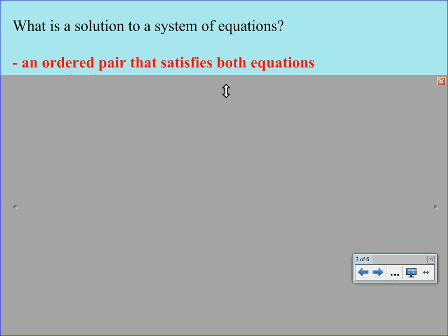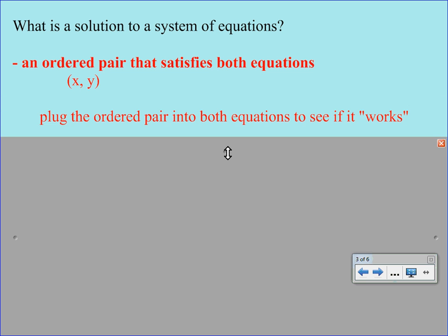We have two definitions or two ideas that we talk about when we think about what a solution is. First, it's an ordered pair that satisfies both equations. Now you may not know exactly what that means. So let's just kind of break down this vocabulary. An ordered pair is simply just an xy point or coordinate. And when we talk about satisfying both equations, what that means is that you're going to plug the ordered pair into the equations to see if it works.